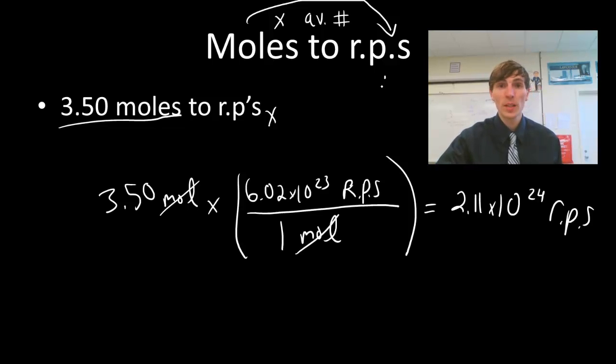Now, if you wanted to go from representative particles back to moles, you, of course, would be dividing by Avogadro's number, and your units and everything would be a little different. We'd flip that converter around.